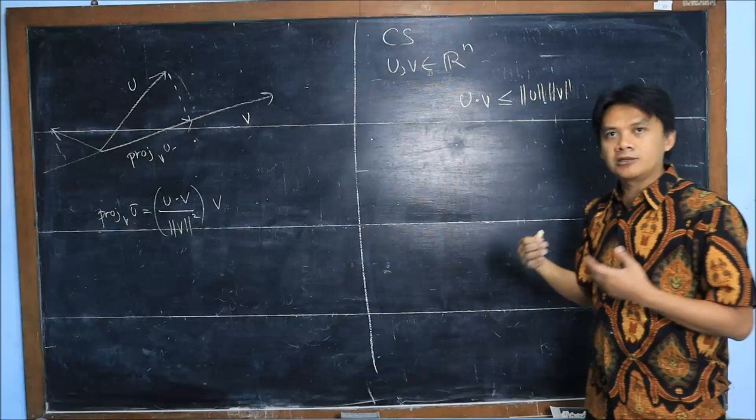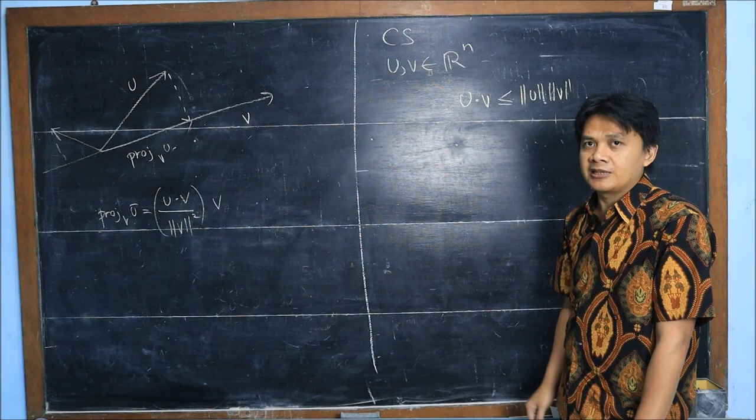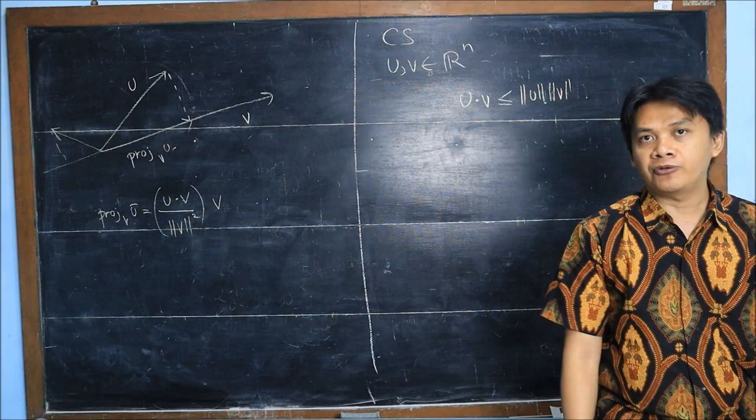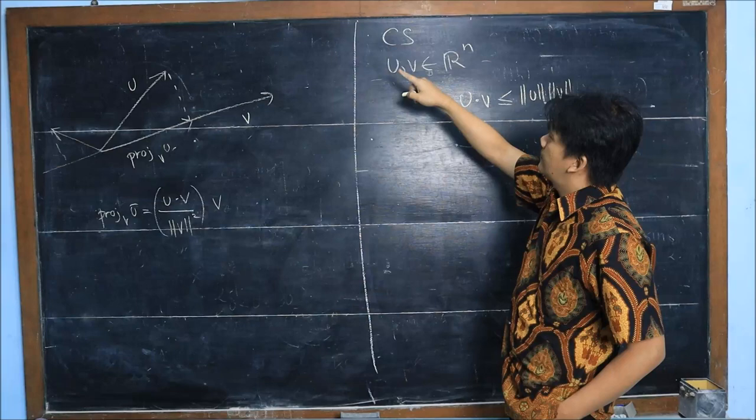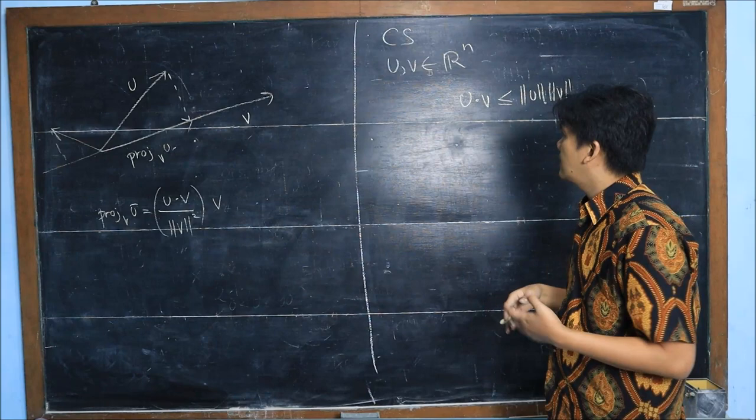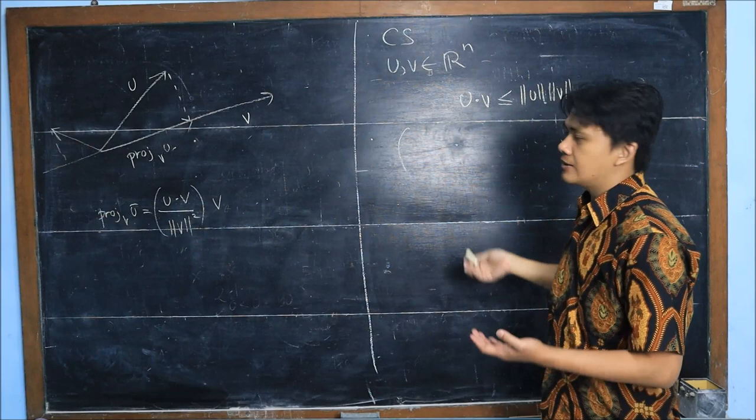This is the Cauchy-Schwarz inequality in terms of vectors, and this is exactly the same as the normal Cauchy-Schwarz that you know. If you want to see that, let's call the components of u to be u1, u2, and so on, and the same for v.